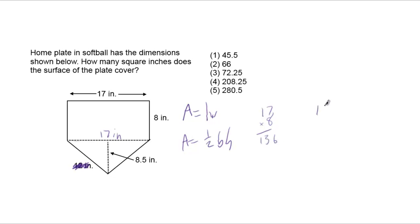We're going to add 136 to whatever the area of this triangle is, which is one-half base times height. The base is 17 inches, the height is 8.5. So 17 times 8.5 is 144.5. We just keep that in our calculator to save us some time and we divide by 2.